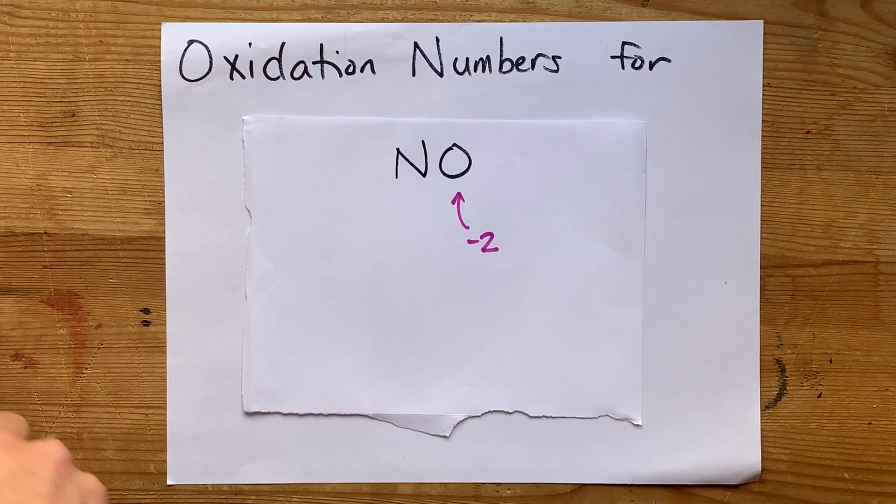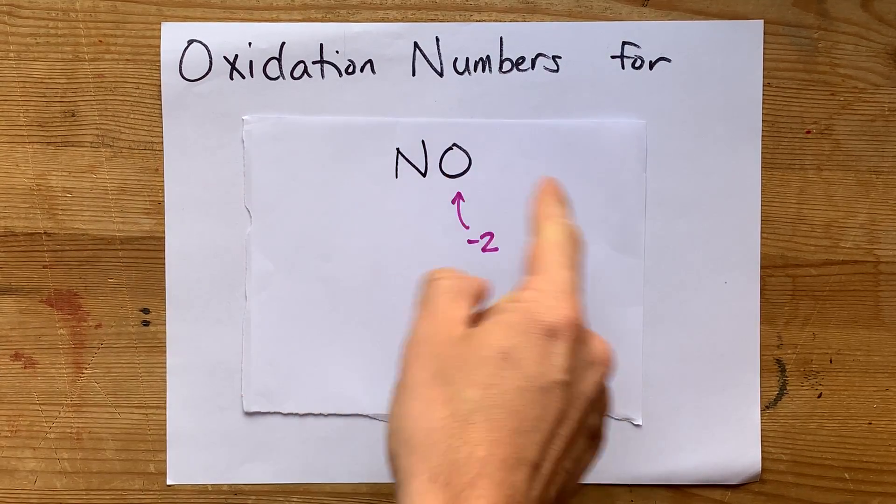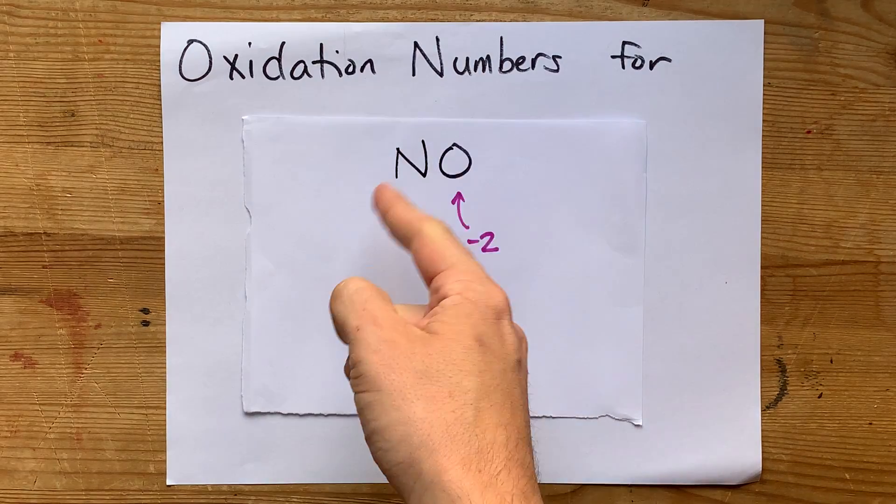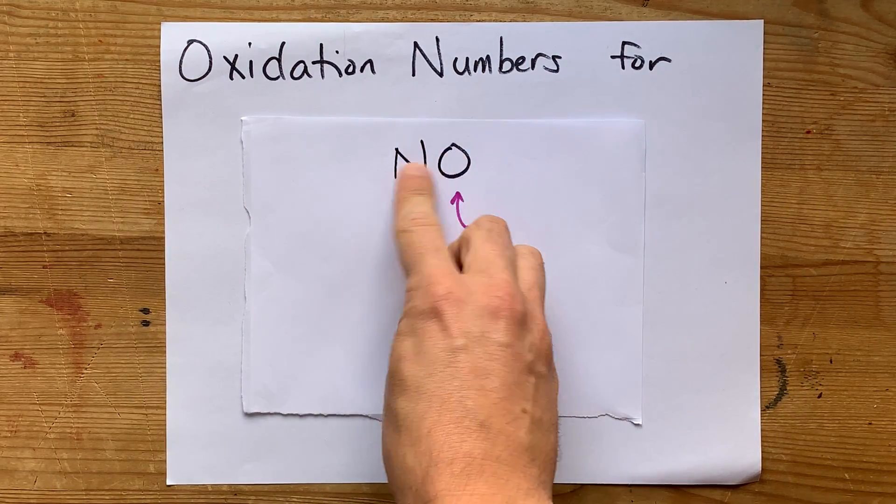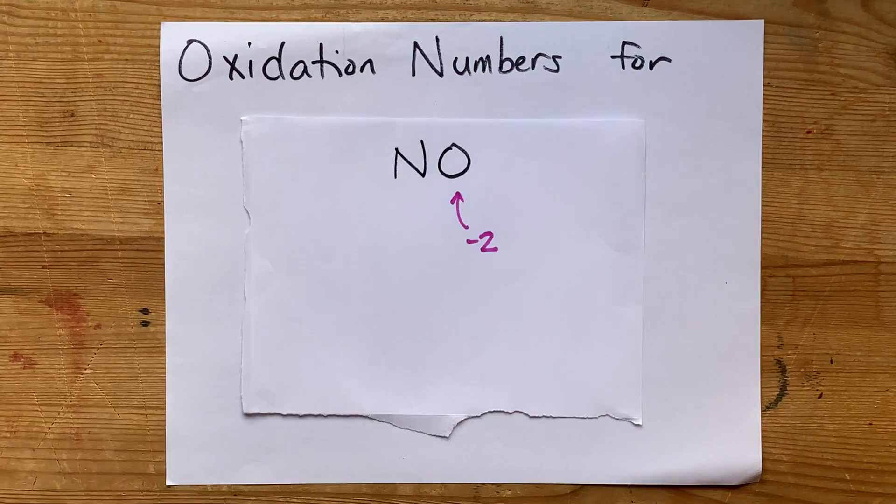Now, the other rule of oxidation numbers is that the sum of all the oxidation numbers of all the atoms has to add up to the total charge on the particle, which here is zero, because there's no charge written.